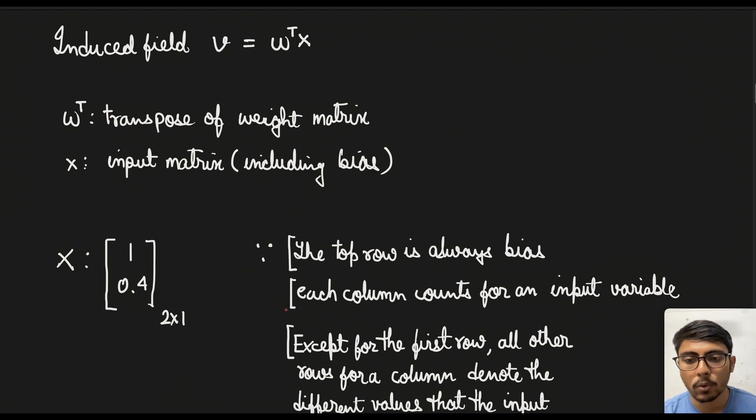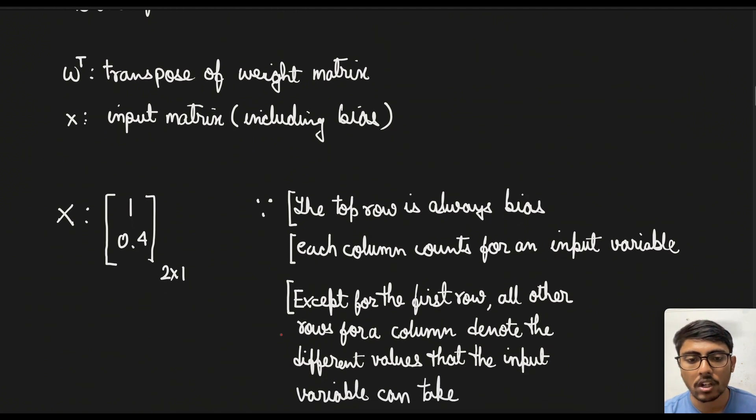The next thing is each column will count for an input variable. In our case it is x. If there had been more input variables then there would have been more columns. Now except for the first row all other rows for a column, that is for an input variable, denote the different values that the input variable can take. Basically if x in the table could have taken 0.5 and 0.6 then those would have been written below 0.4 as separate rows.